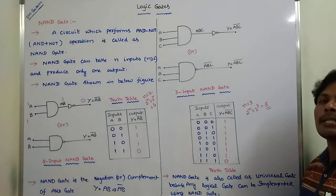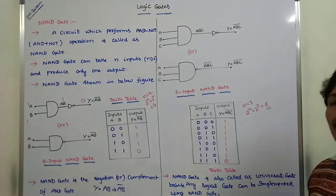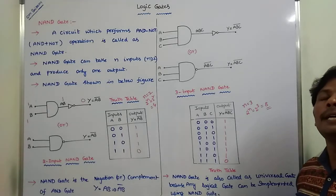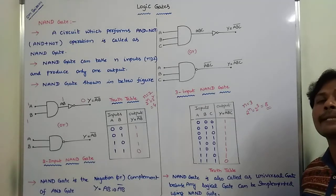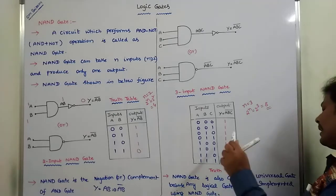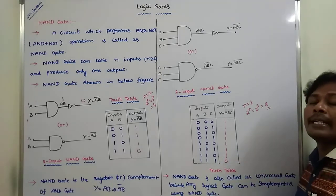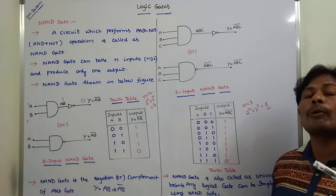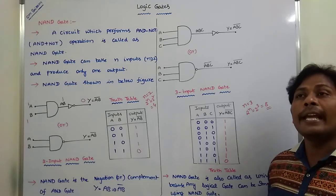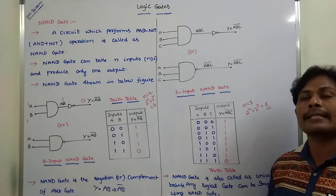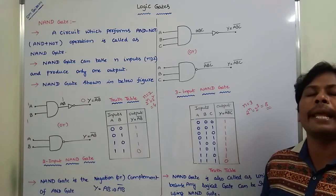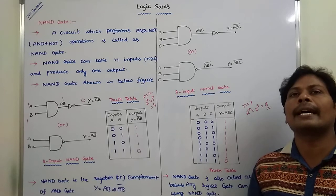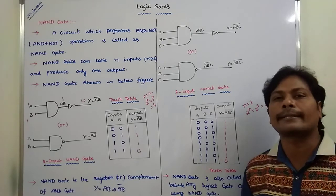The NAND gate is called a universal gate because any logic gate — such as AND, OR, NOT, XOR, and XNOR — can be implemented using only NAND gates. Similarly, the NOR gate is also called a universal gate because AND, OR, NOT, XOR, and XNOR can all be implemented using NOR gates. Hence, NAND and NOR gates are both called universal gates.